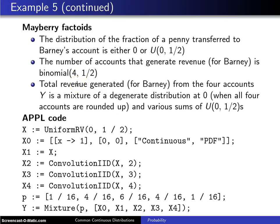So each depositor is basically a coin flip that will either generate him some revenue or not generate him some revenue. This means that the total revenue which is generated from Barney for the four accounts Y is a mixture of a degenerate distribution at zero, and by degenerate distribution it has all of its mass at zero, and that's when all four of the accounts are rounded up, and various sums of uniform zero and one-halves.